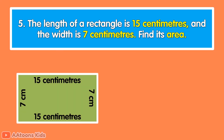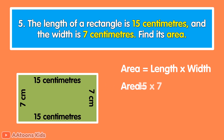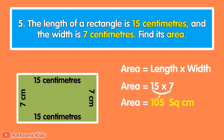The length of a rectangle is 15 centimeters and the width is 7 centimeters. Find its area. The area of a rectangle is length multiplied by width. Length is 15 centimeters and width is 7 centimeters. 15 multiplied by 7 is 105, so the area of the rectangle is 105 square centimeters.